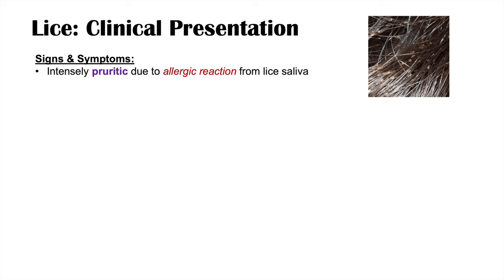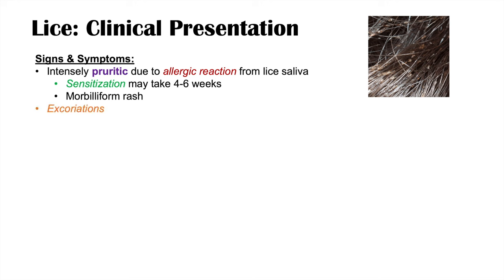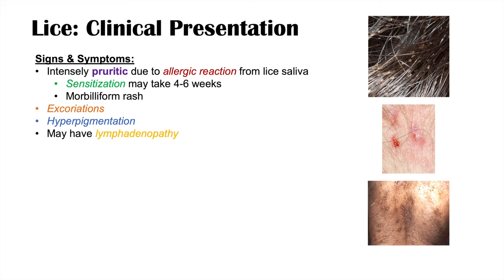The clinical presentation of lice includes simply seeing the lice or nits in the hair. Other symptoms include intense pruritus — intense itching — due to an allergic reaction from lice saliva. This generally occurs after sensitization from the saliva, which takes about four to six weeks. This sensitization and pruritus can lead to a morbilliform rash, excoriation (scratch marks), and hyperpigmentation. Individuals may also have regional lymphadenopathy — enlarged, tender lymph nodes.